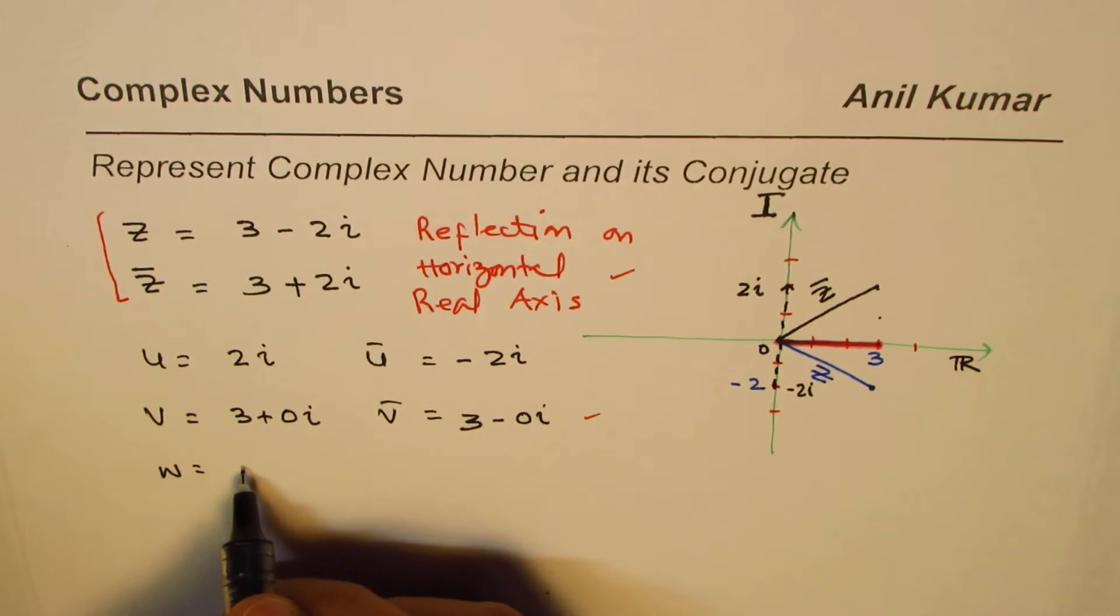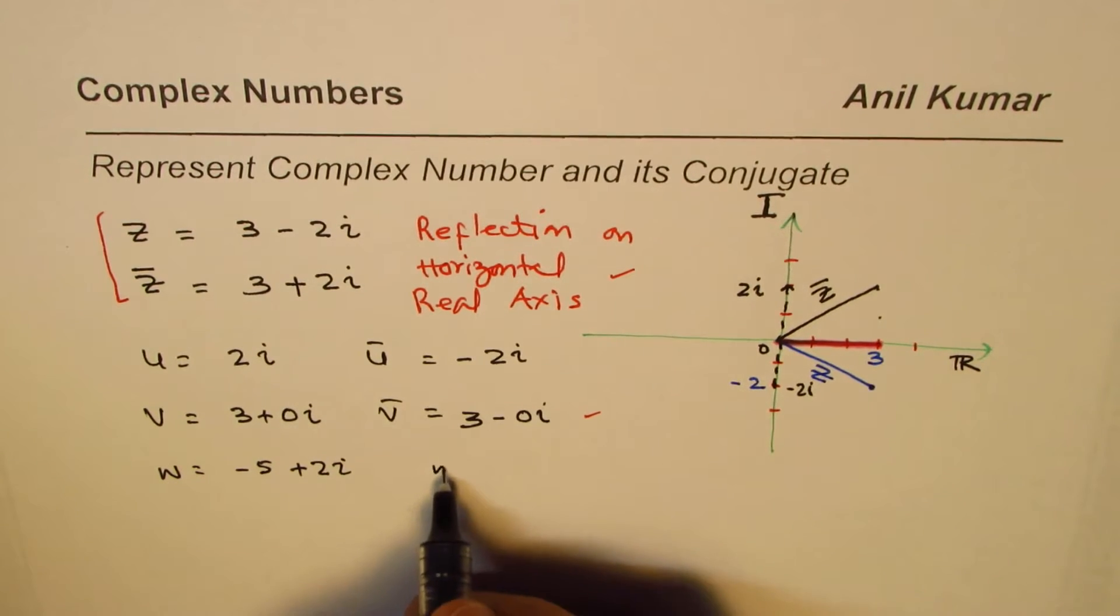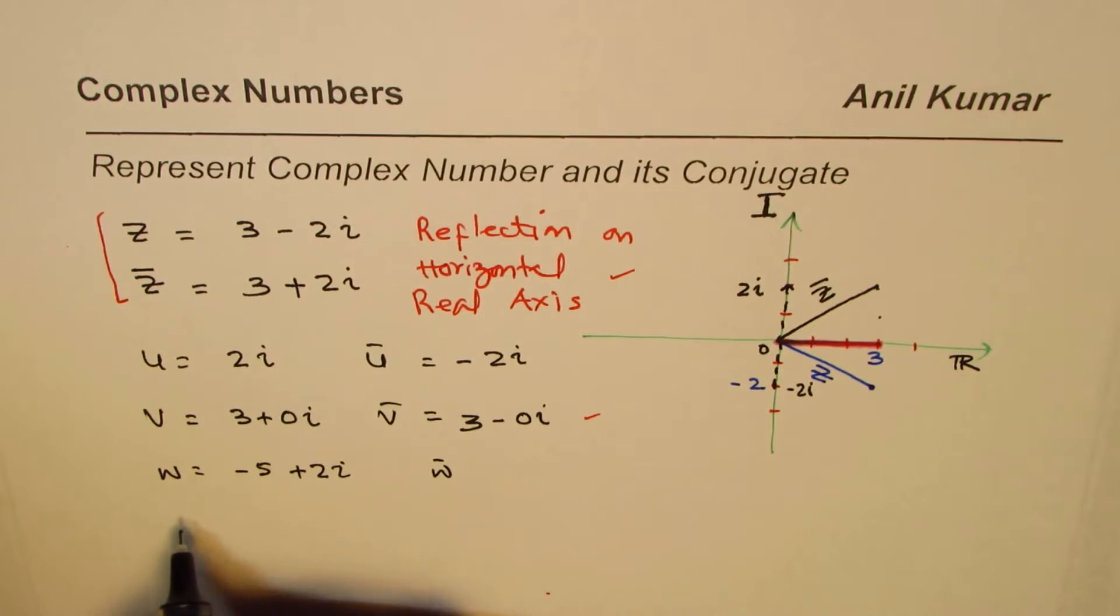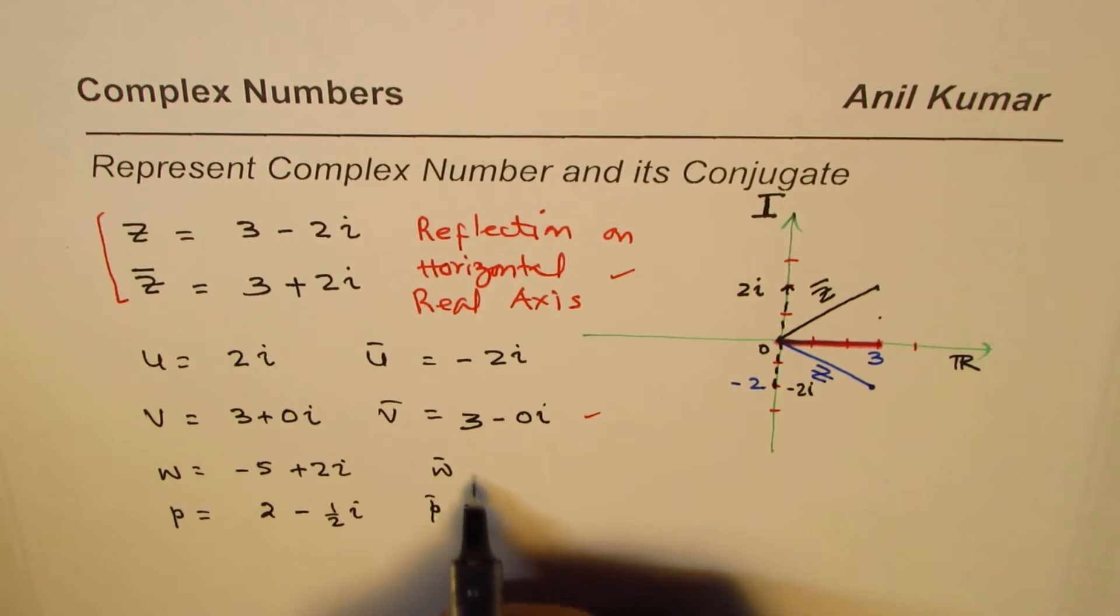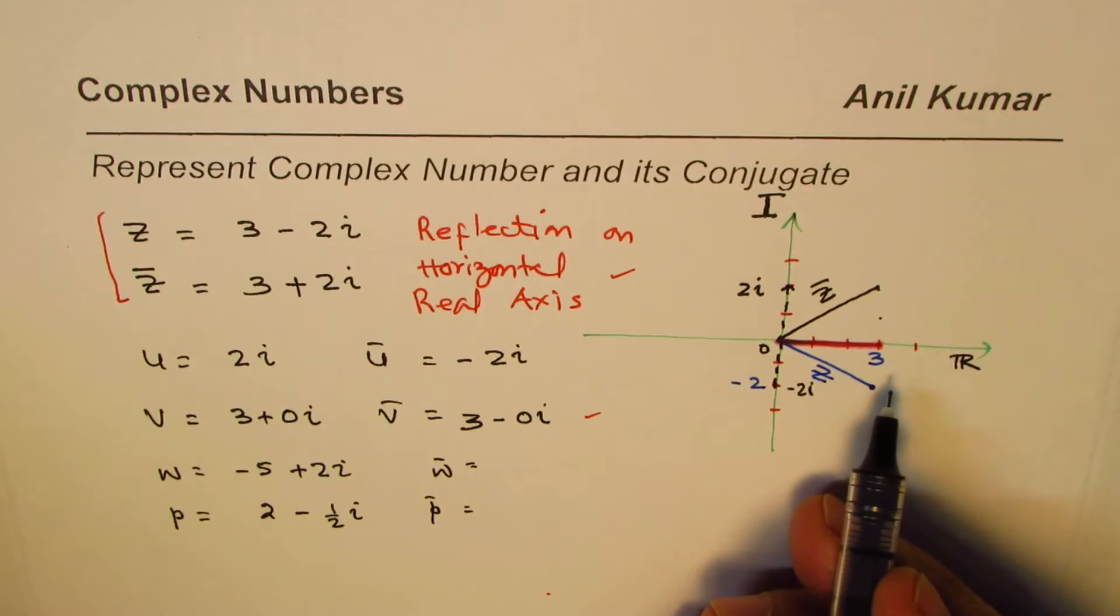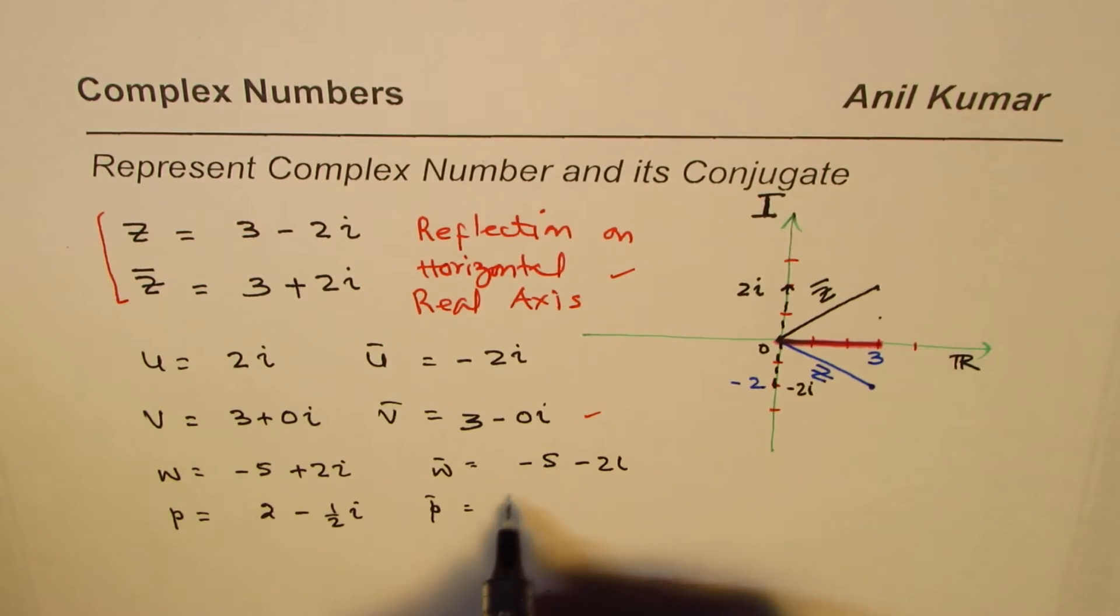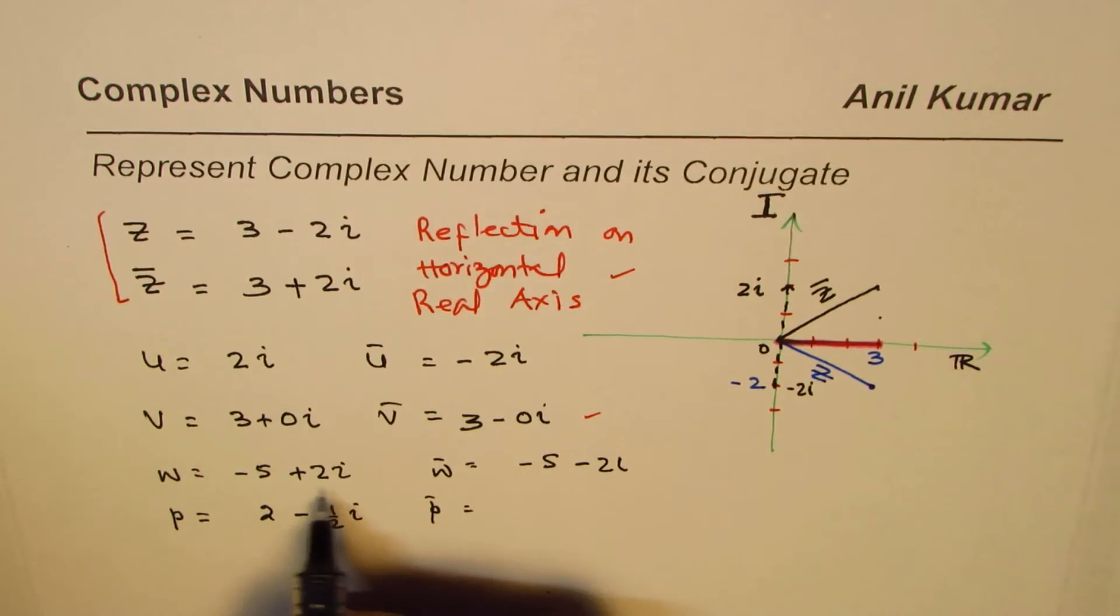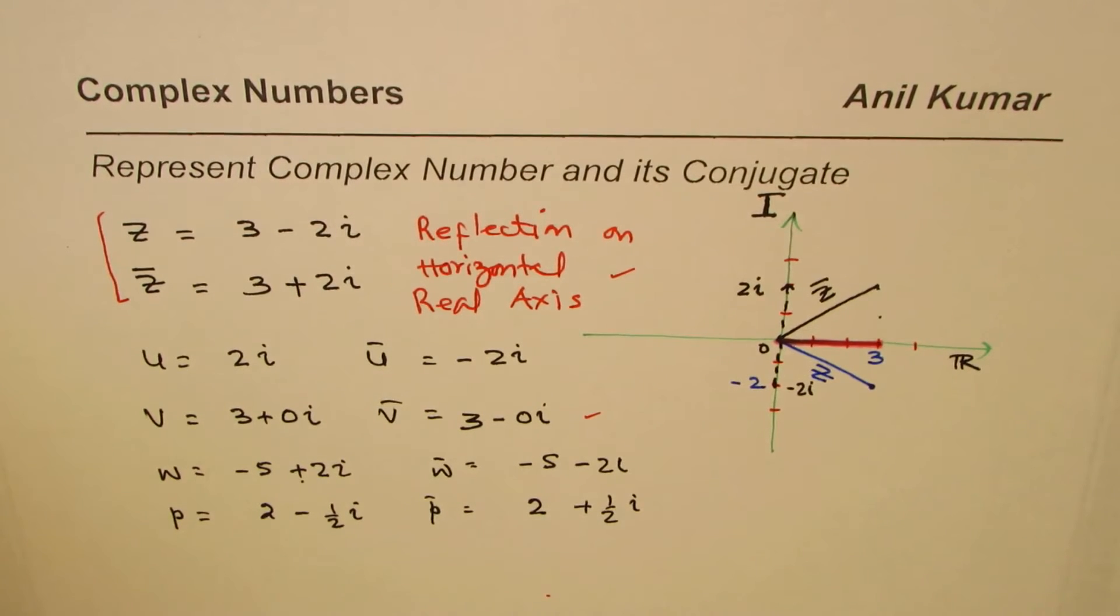Let's say we have w = -5 + 2i. Write down its conjugate. And then you could have p = 2 - (1/2)i. Write down its conjugate and represent it on the plane. The conjugate of w will be -5 - 2i. Do not negate the real part—that's why I did it for you. Only the imaginary part changes sign. The conjugate of p will be 2 + (1/2)i.